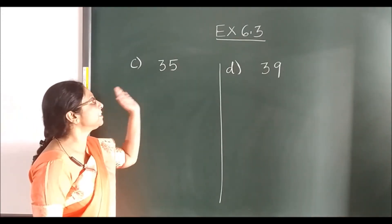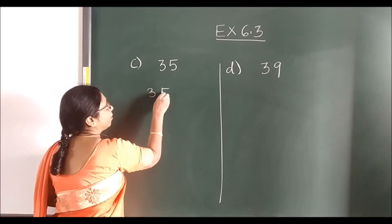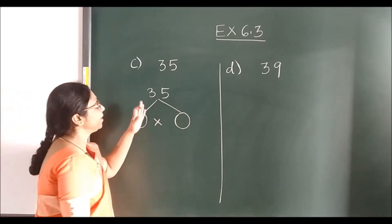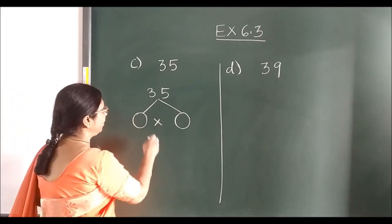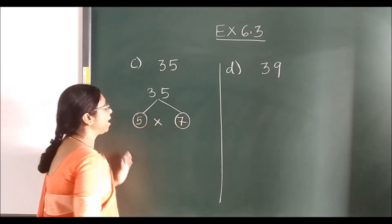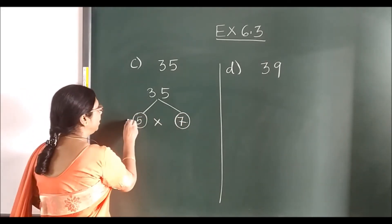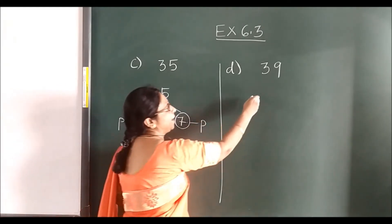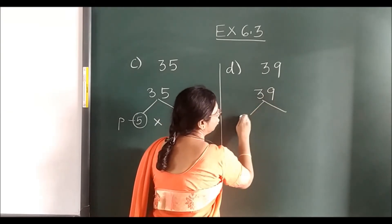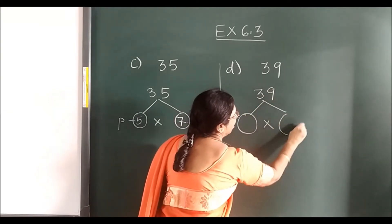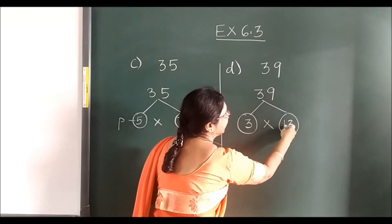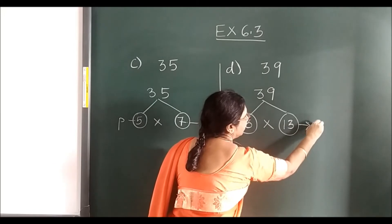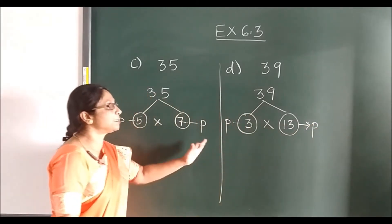Now let's see C and D also. Write 35 and split it into 2. 35 comes in the 5 times table: 5 and 7, which is 35. Both are prime numbers so we can stop here. Same for 39 — split it into 2: it comes in the 3 times table, 3 and 13 equal 39. Again both are prime numbers, so our sum is complete.